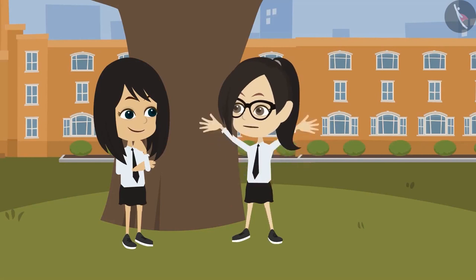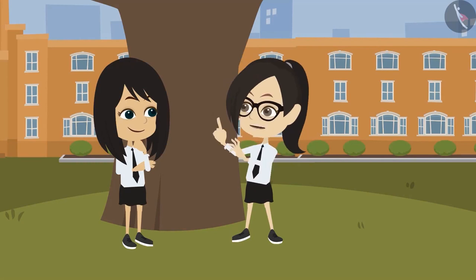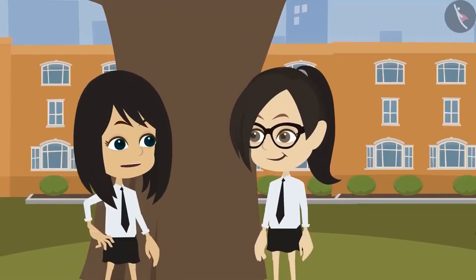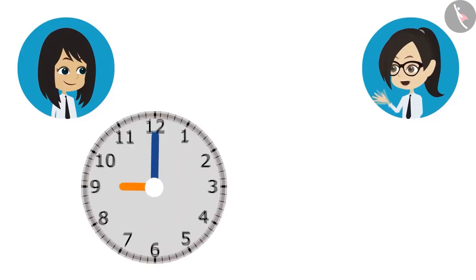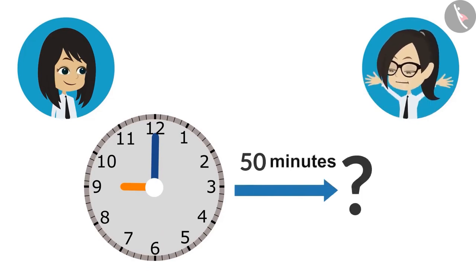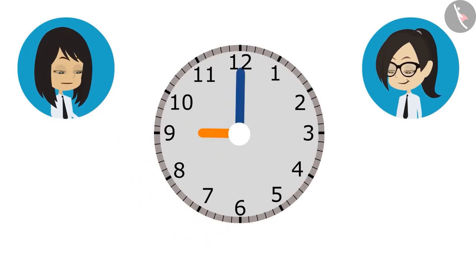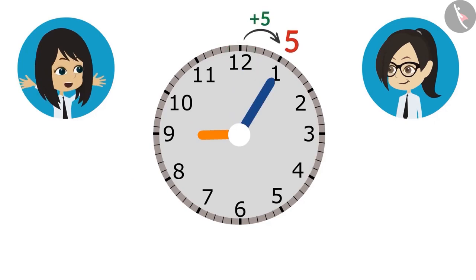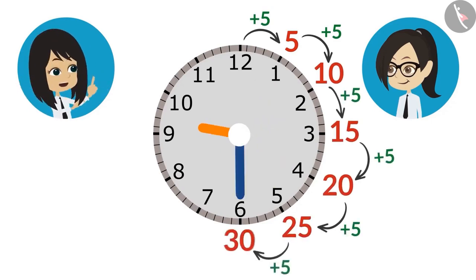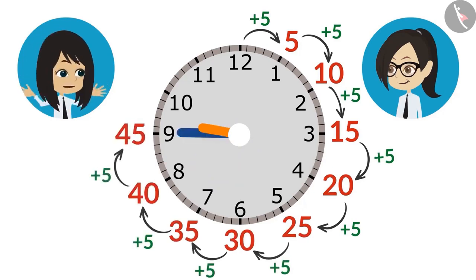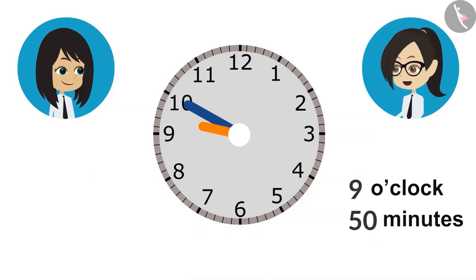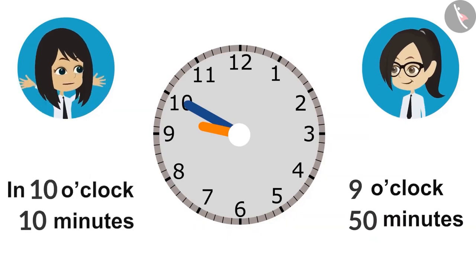Now, let us find out: a class is 50 minutes long — at what time will it finish if it starts at 9 o'clock in the morning? The start time and duration are known; we have to find the end time. I have drawn the start time on this clock. The minute hand is at 12. When we bring it to 1, it will be 5 minutes; to 2 is 10 minutes; 15 at 3, 20 at 4, 25 at 5, 30 at 6, 35 at 7, 40 at 8, 45 at 9. We can also say the class will end 10 minutes to 10 o'clock.